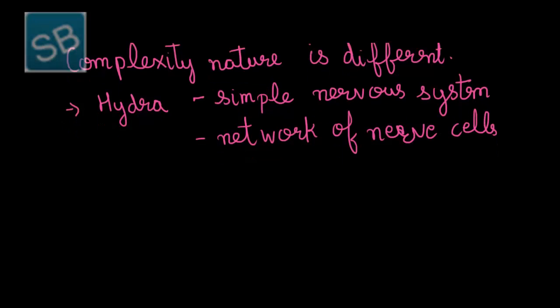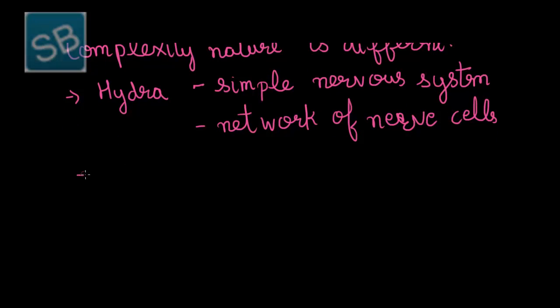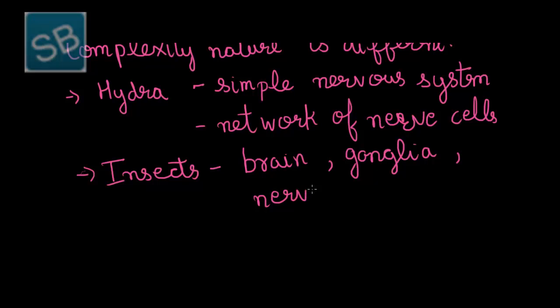Following them, the second, that is insects, possess more complex nervous system consisting of brain, ganglia, and the complex nerve cells resulting into the formation of nervous system.